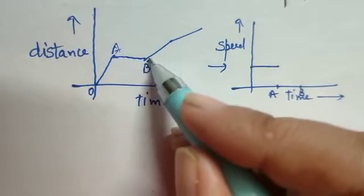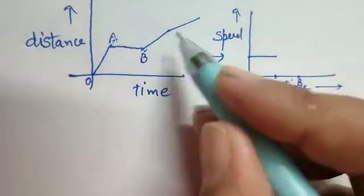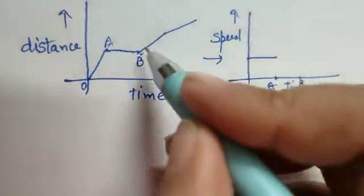After that, it is again covering equal distance in equal interval of time because you are getting a straight line. So we can show this is having some velocity.